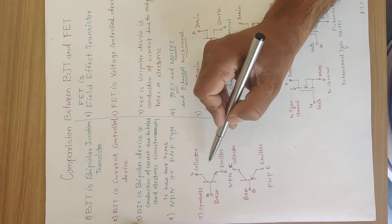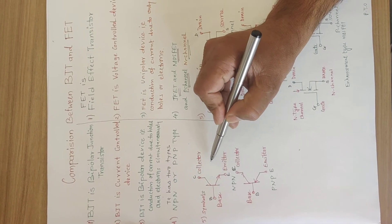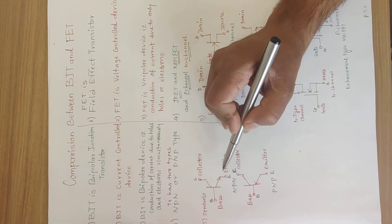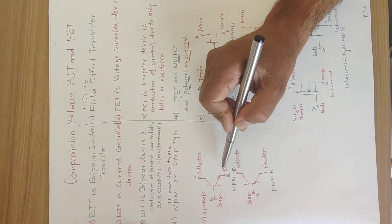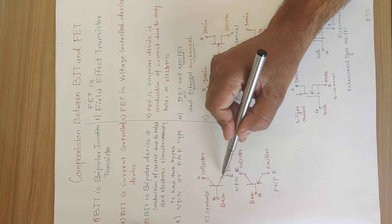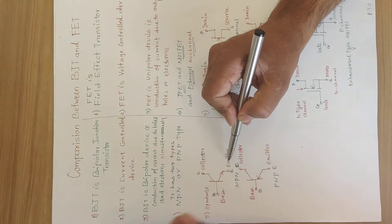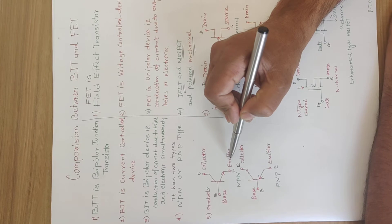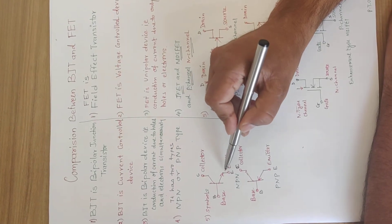In BJT, we know that there are three terminals: collector, emitter and base. In NPN transistor, the arrowhead indicates the place of the N-type semiconductor that is emitter.